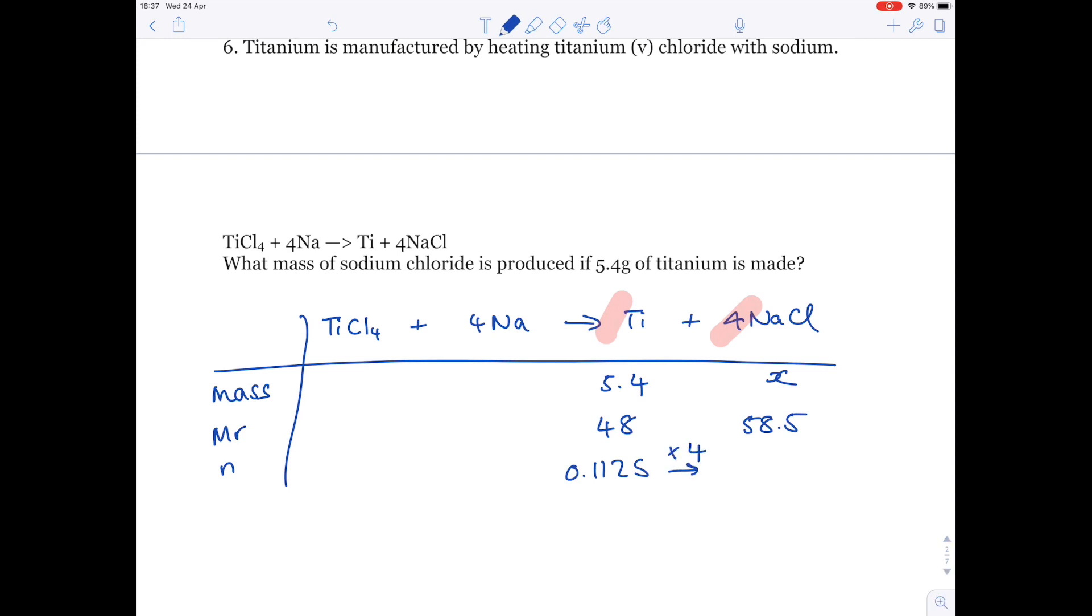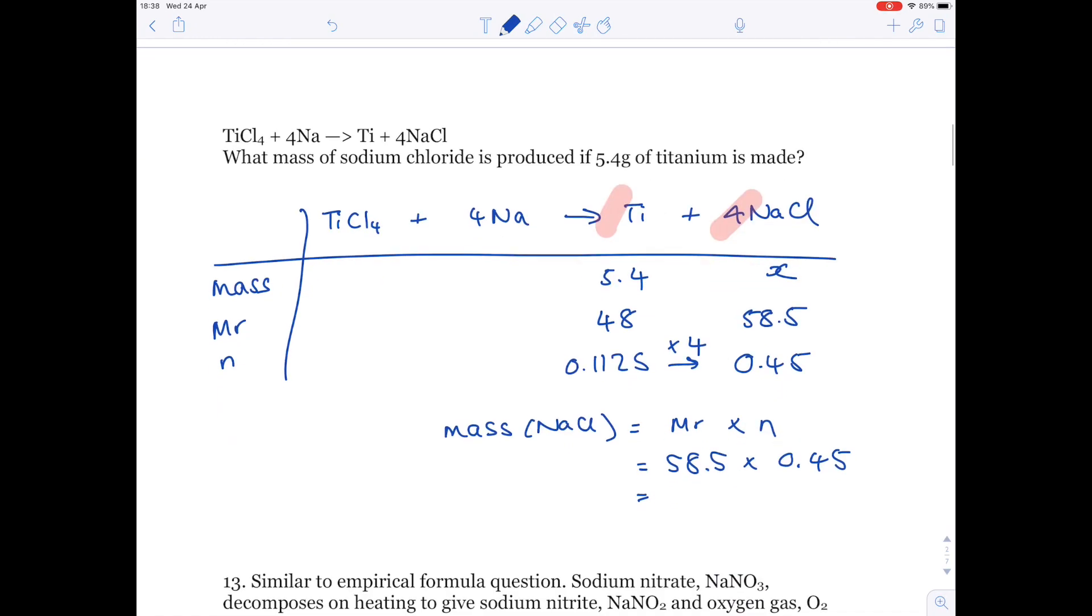There's a big 4 there, so you need to multiply this number by 4 to find out the number of moles of sodium chloride, which is 0.45, and now you can see, to work out the mass of sodium chloride, you need to do MR times number of moles. Our MR is 58.5. Our number of moles we've just calculated.